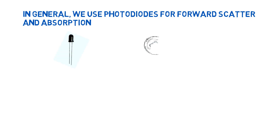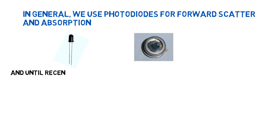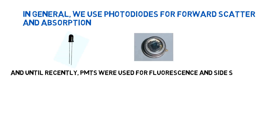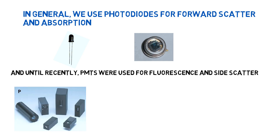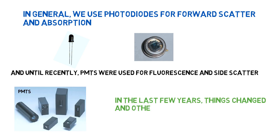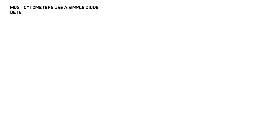In general, we use photodiodes for forward scatter and absorption. And until recently, PMTs were used for fluorescence and side scatter. But in the last few years, things changed, and other detectors are being used.